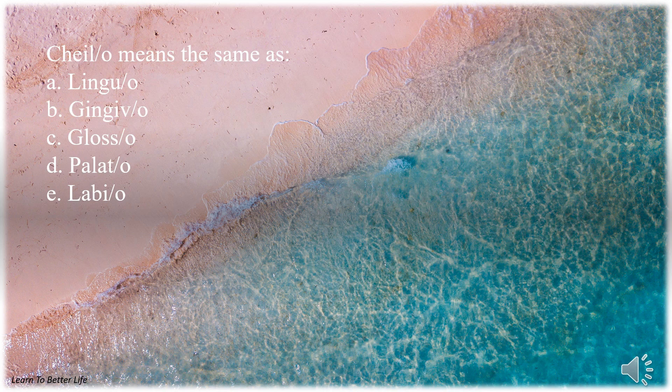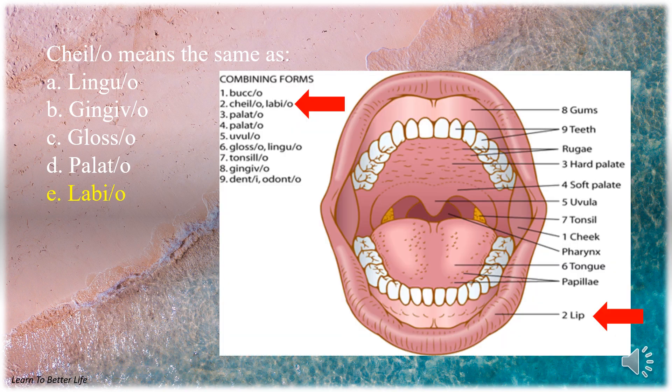Chilo means the same as. A. Linguo. B. Gingivo. C. Glosso. D. Palato. E. Labio. The answer is E. Labio.